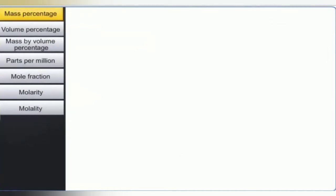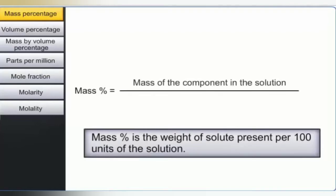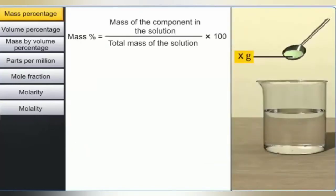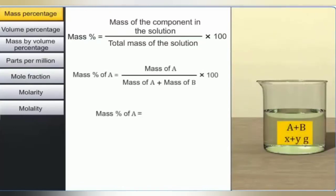Let us start with mass percentage, or weight by weight percentage. The mass percentage of a component of a solution is defined as the mass of the component in the solution divided by the total mass of the solution, multiplied by 100. If x grams of component A is dissolved in y grams of component B, then the mass percentage of A is given by x divided by (x plus y), multiplied by 100.